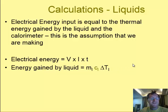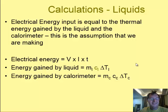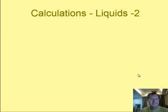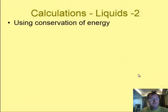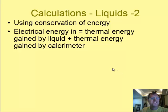The energy input is going to equal the mass of the liquid multiplied by the specific heat capacity of the liquid times the change in temperature of the liquid, plus the mass of the calorimeter multiplied by the specific heat capacity of the calorimeter multiplied by the change in temperature. If we carry this through we realise by conservation of energy that the electrical energy in is going to be equal to the thermal energy gained by the liquid and the thermal energy gained by the calorimeter.